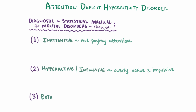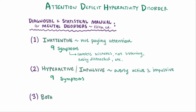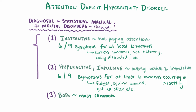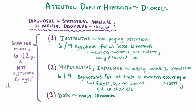Inattentive and hyperactive-impulsive each have a set of nine symptoms. For example, someone with the inattentive subtype might make careless mistakes, or not listen, or be easily distracted. And someone with the hyperactivity and impulsive subtype might fidget, squirm around, or get up from their chair often. A diagnosis is given when someone has six of the nine symptoms for either subtype for at least six months, occurring in more than one setting. Most commonly, children have symptoms of both subtypes and therefore have the combined subtype. Since ADHD is considered a neurodevelopmental disorder, the symptoms also have to have started between age six and twelve, and the behavior can't be appropriate for their age or developmental level.